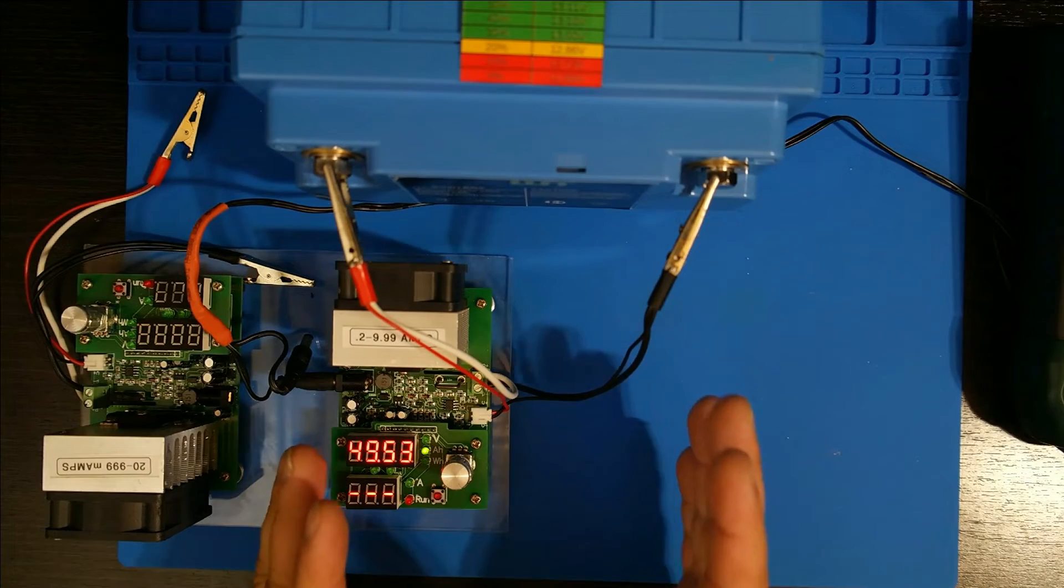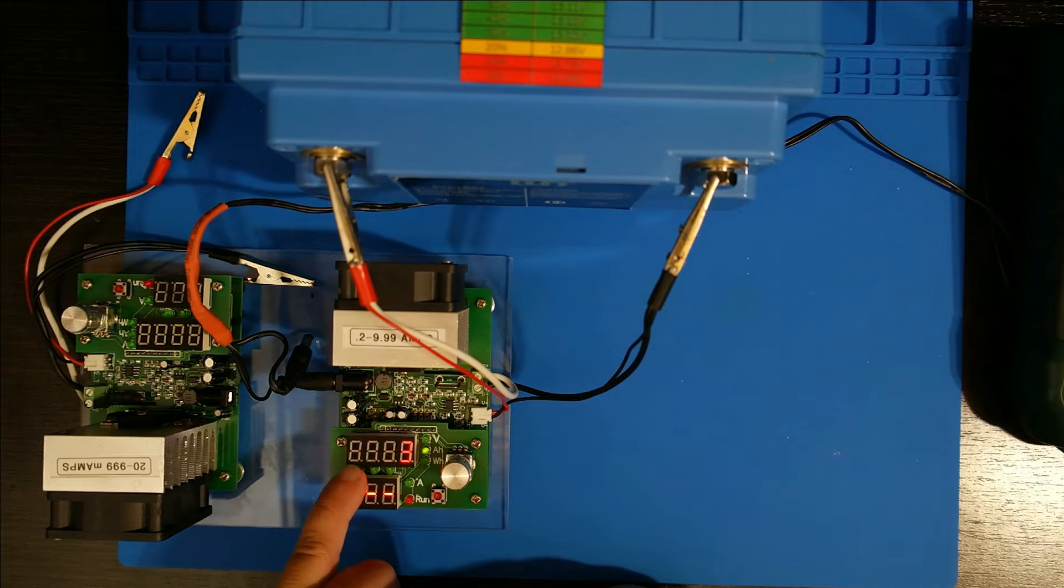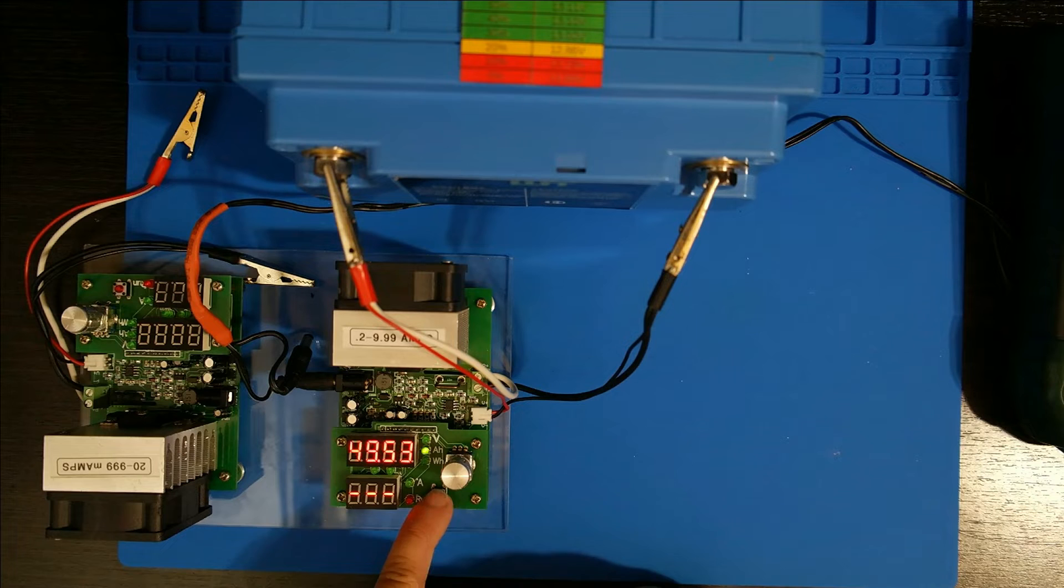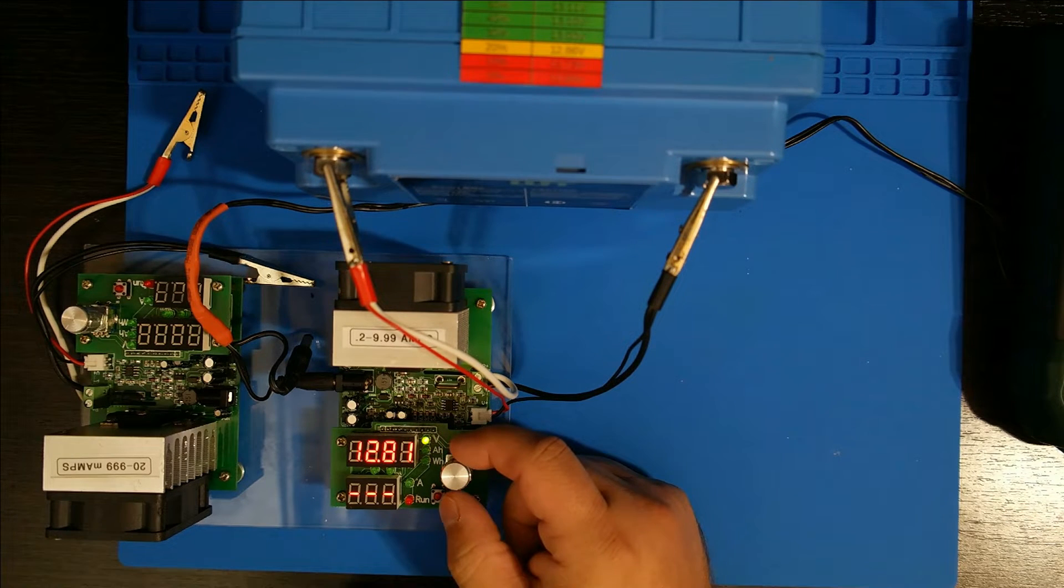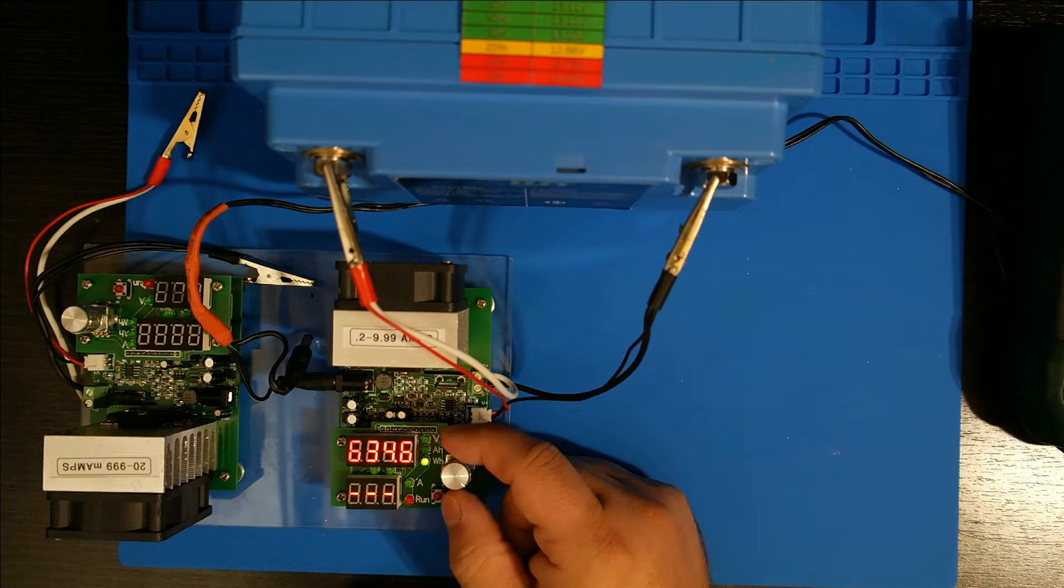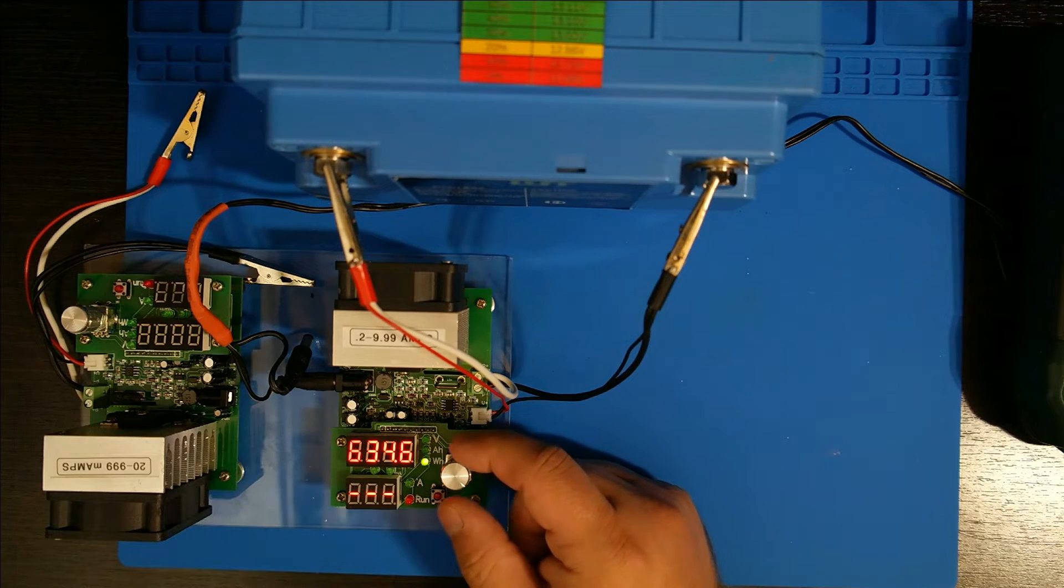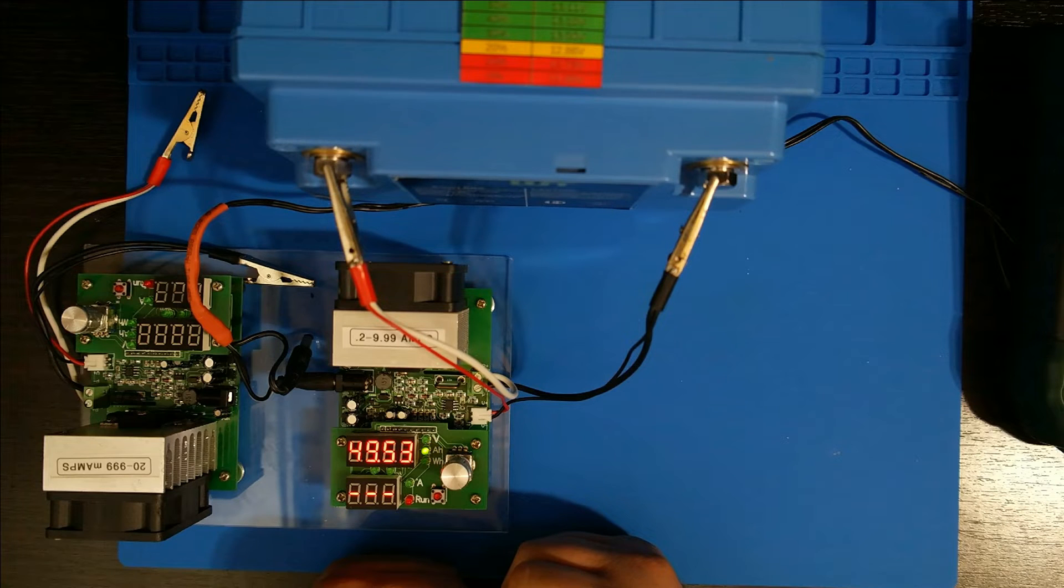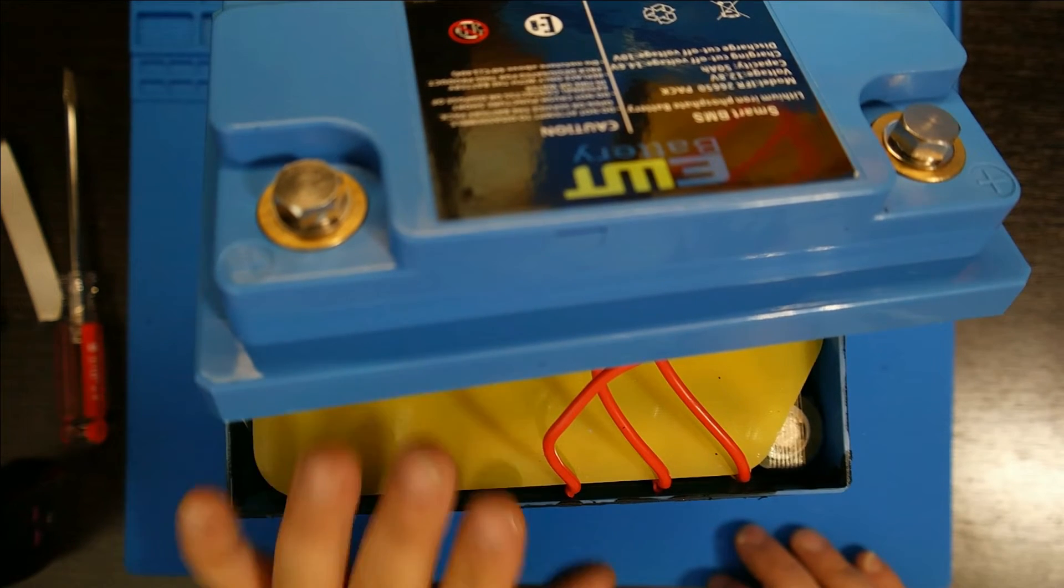Okay, so that is finally done and it's blinking like crazy saying that there is 49.53 amp hours in this battery. Let's see here, 634.6 watt hours. So let's get this battery recharged again and we will continue.